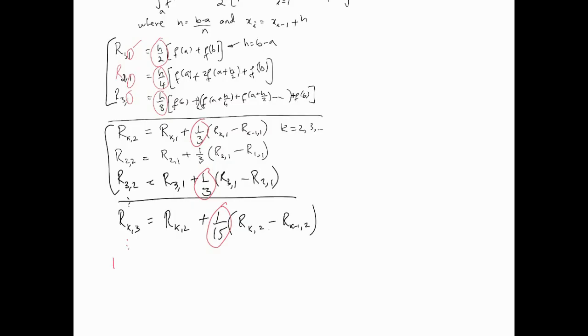Now there is a generalized formula for this, which I will put here for you, which is that in general, R_{K,J} is equal to R_{K, J minus 1}, so it's 1 less, always, plus, and this key number here is in fact calculated as follows, J minus 1 is power 4, 4 to the power J minus 1, and then subtract 1 from it,